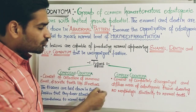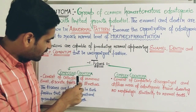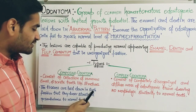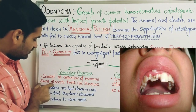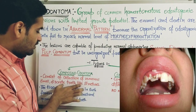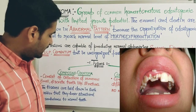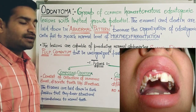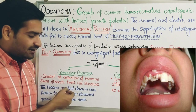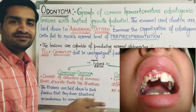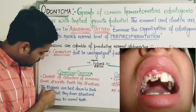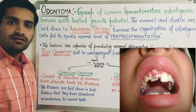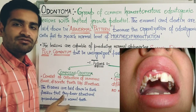There are two types of odontomas. First is compound odontoma, and second is complex odontoma. In compound odontoma, it consists of a collection of numerous small, discrete tooth-like structures. There will be laying down of enamel and dentine, but they will be small, discrete, and tooth-like — not exactly like a tooth but resembling a tooth. The tissues are laid down in such a fashion that they bear structural resemblance to normal teeth.